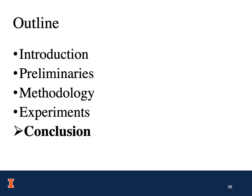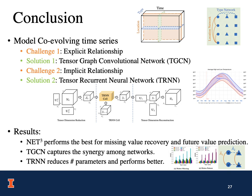Now let me conclude this presentation. In this paper, we focus on modeling co-evolving time series. We propose a tensor graph convolutional network to capture the explicit relationship, and a novel tensor recurrent neural network to model the implicit relationship. The experimental results show that our full model, NetCubic, performs best for missing value recovery and future value prediction. TGCN captures the synergy among networks, and TRN reduces the number of parameters and performs better than the baselines. Thank you for listening.